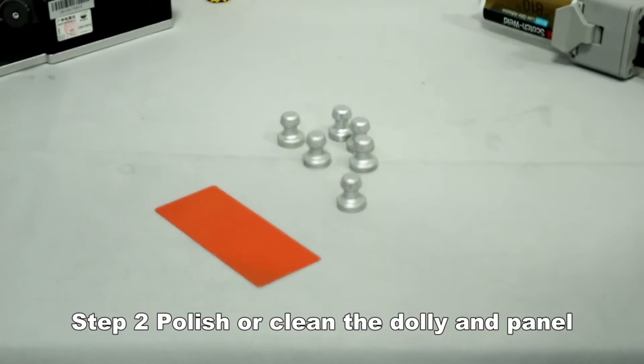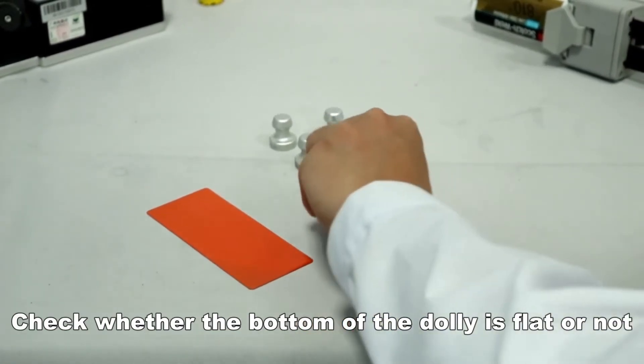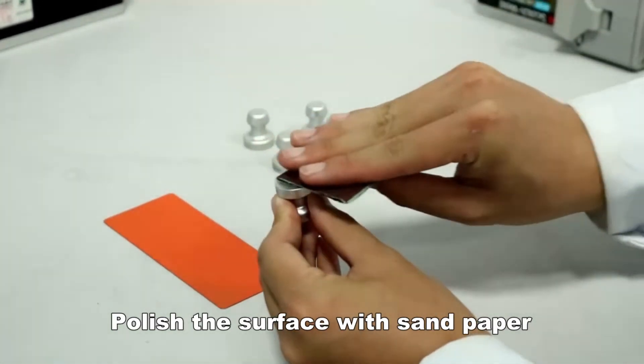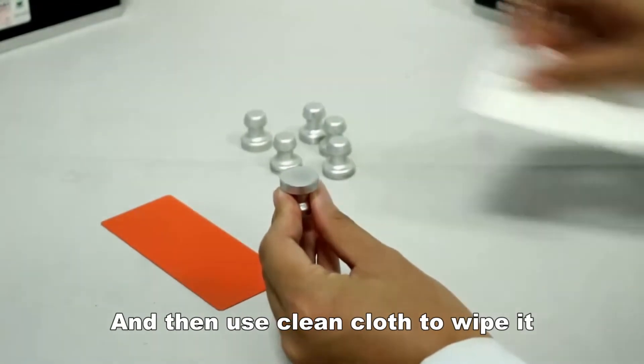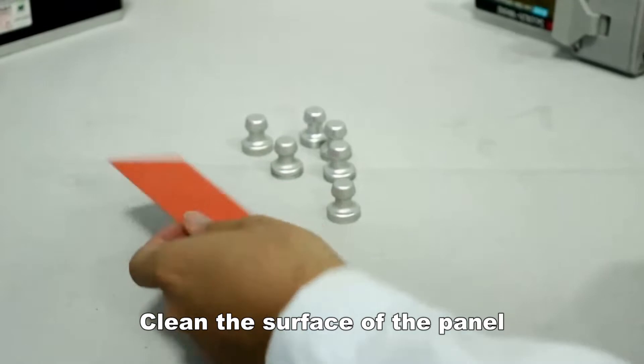Polish or clean the dolly and panel. Check whether the button of the dolly is flat or not. Polish the surface with sandpaper, and then use a clean cloth to wipe it. Clean the surface of the panel.